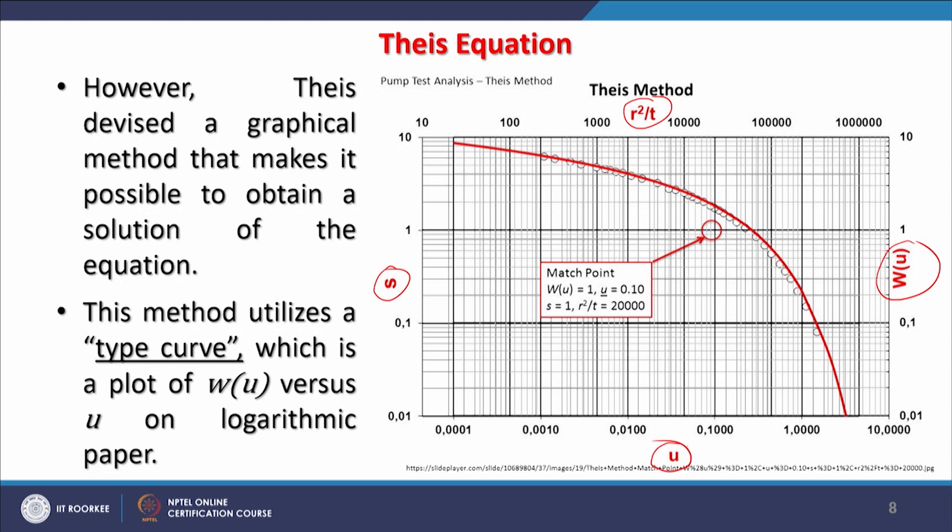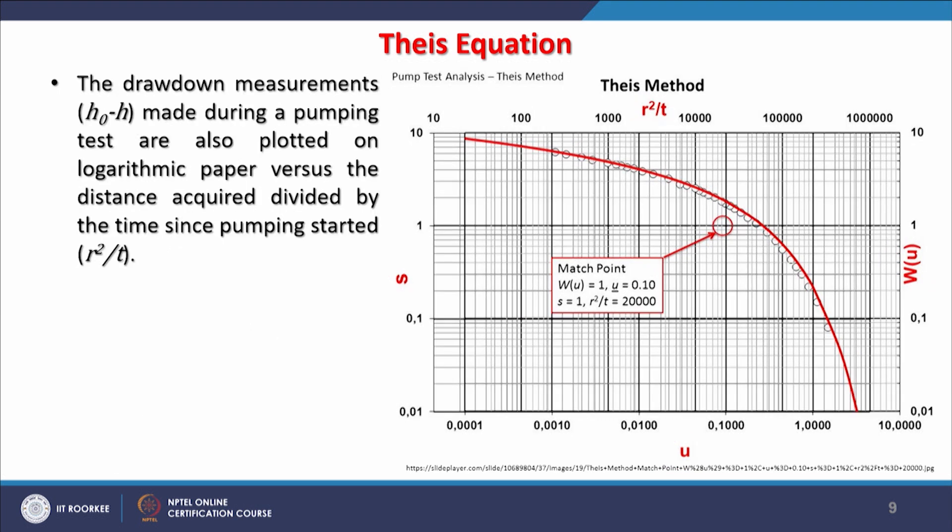This method utilizes a type curve. When your value comes, you have to match the point and accordingly the rest of the information can be obtained. This is w(u) versus u on logarithmic paper. It is not semi-logarithmic, please remember that. This is an important point—in earlier graphical methods we were on semi-logarithmic scale or graph.